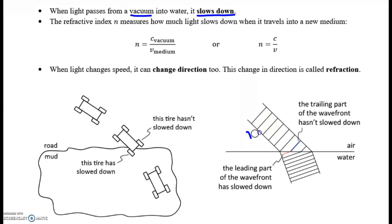The other important thing we've learned is because the light slows down, it bends. And it changes direction. That changing direction is called refraction.